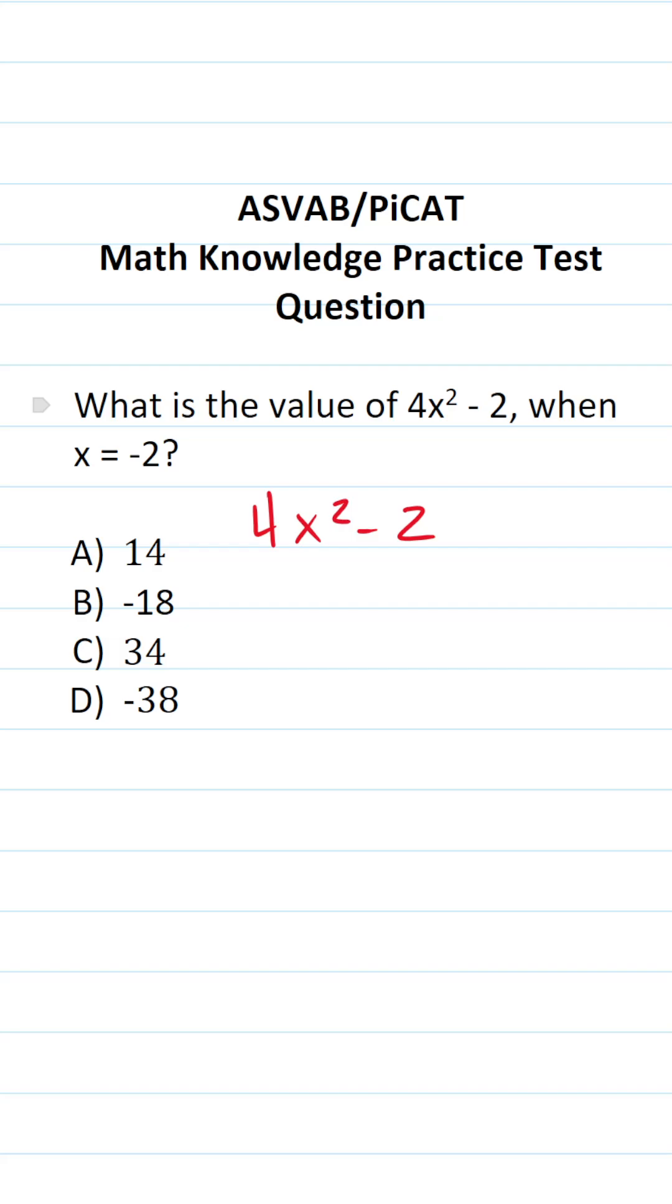In order to solve this one, we have to evaluate this expression when x equals negative 2. So the first thing I'm going to do is plug in negative 2 wherever I see x. This becomes 4 times negative 2 squared minus 2.